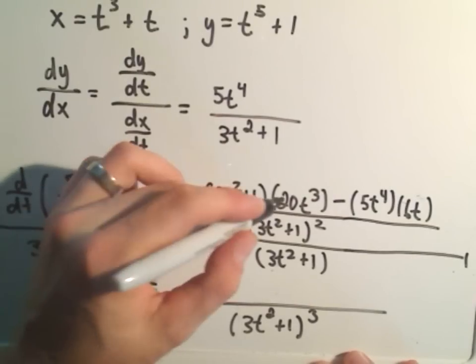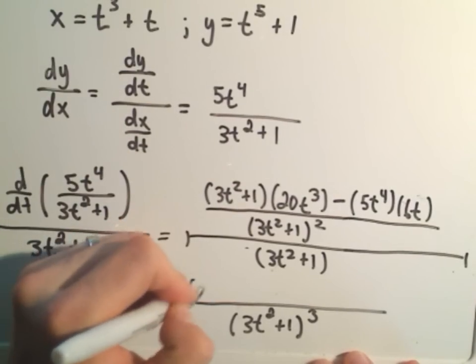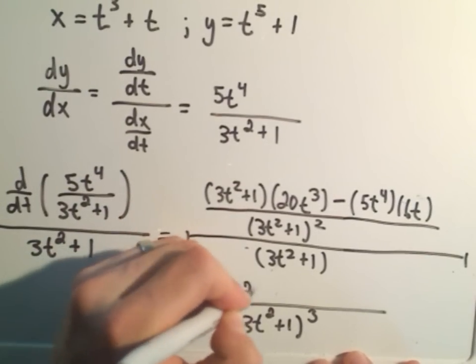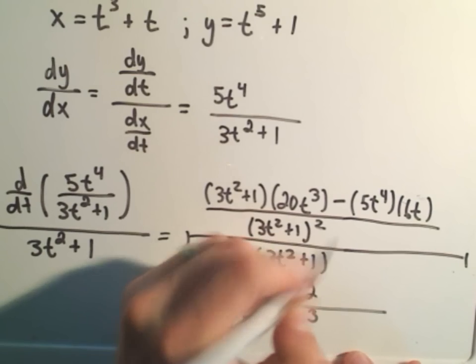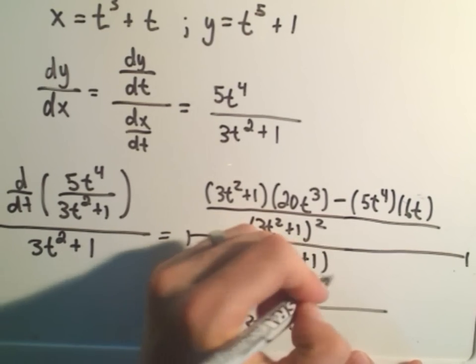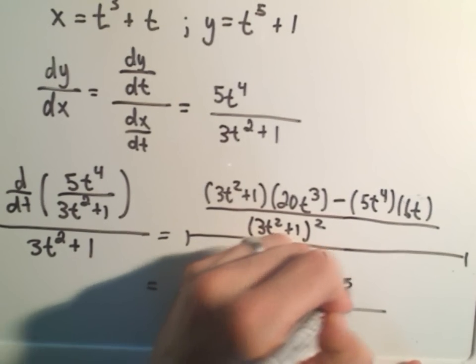So if we distribute, we'll get 20 and 3. That'll give us 60t to the fifth plus 20t cubed minus, whoops, how about 30t to the fifth.